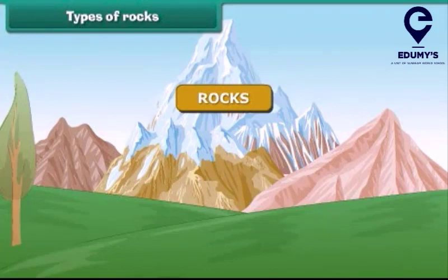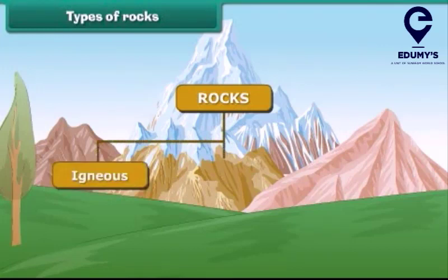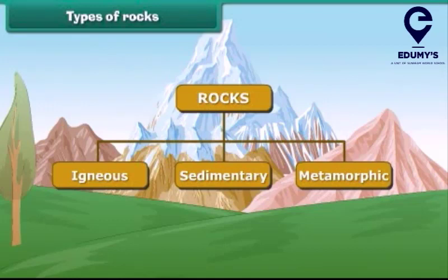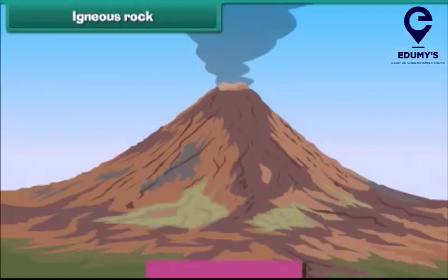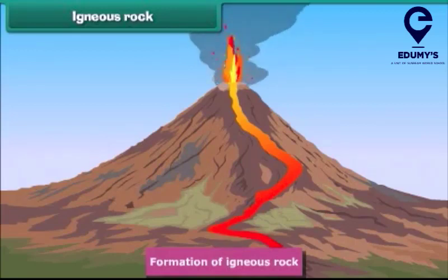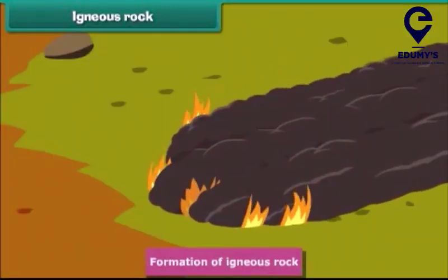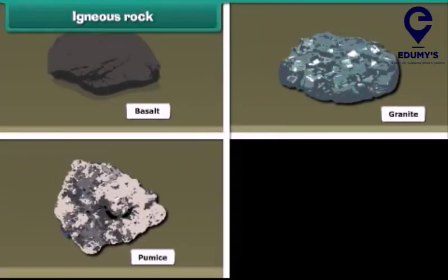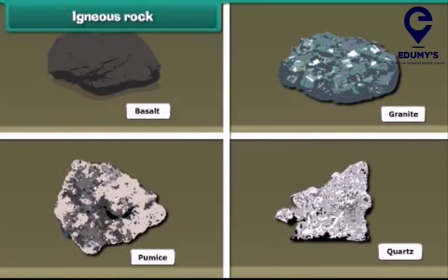There are three main types of rocks depending on how they are formed. These are igneous rocks, sedimentary rocks, and metamorphic rocks. Igneous rock is formed when molten rocks like lava in volcanoes cool and get hardened and solidified. It is often shiny and glossy. Basalt, granite, pumice, and quartz are examples of this kind of rock.